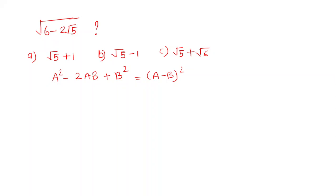We will use the inside value of the square root, which is 6 - 2√5, and compare it with this form. The middle term is -2ab. Here it is -2√5, which is -2 into √5, so a will be √5.